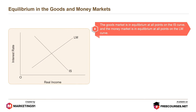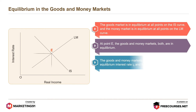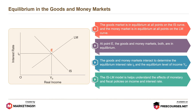The goods market is in equilibrium at all points on the IS curve, and the money market is in equilibrium at all points on the LM curve. At point E, both goods and money markets are in equilibrium. The goods and money markets interact to determine the equilibrium interest rate I0 and the equilibrium level of income Y0. The IS-LM model is helpful in understanding the effects of monetary and fiscal policies on income and interest rates.